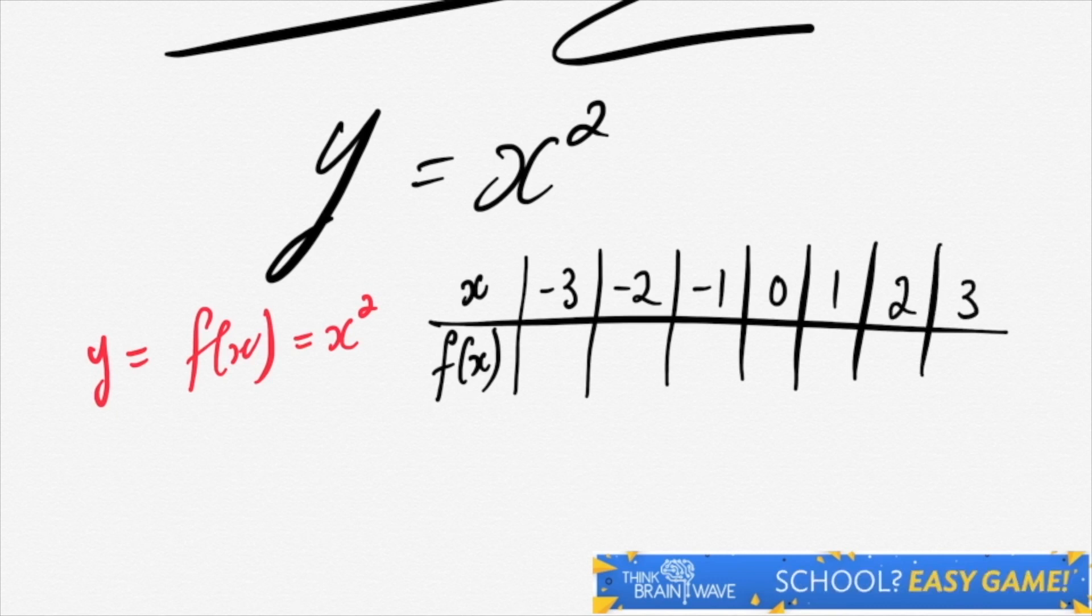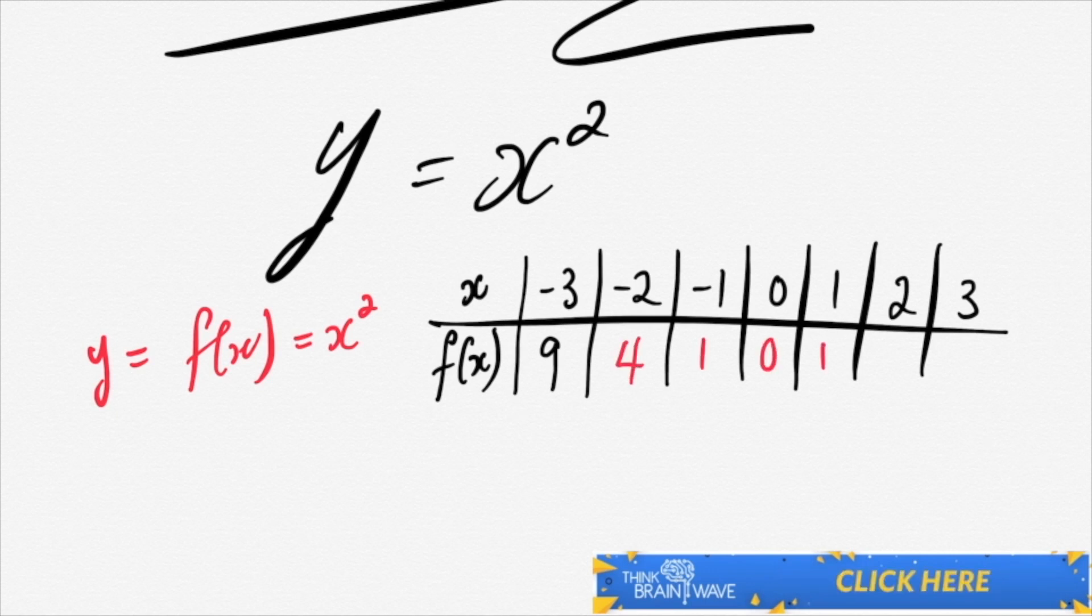For minus 3, when we square it, minus 3 times minus 3 makes 9. The same for minus 2 gives 4, minus 1 makes 1, 0 makes 0, 1 makes 1, 2 makes 4, and 3 makes 9.